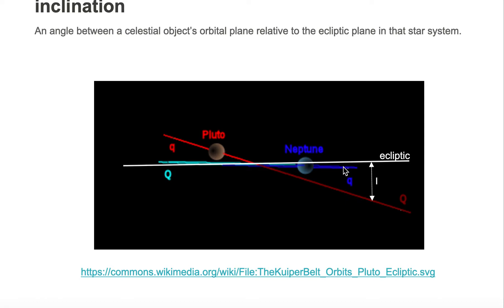The inclination of Neptune's orbit is only about 1.7 degrees, but the inclination of Pluto's orbit is much higher, like 17 degrees.